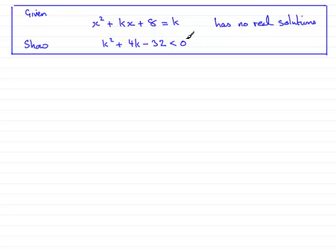So how are we going to do this? Well first of all, I'm going to take the equation that we've got, we'll just copy it down here, x squared plus kx plus 8 equals k.